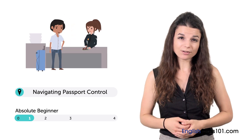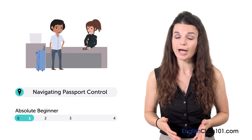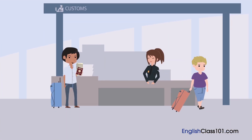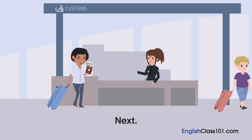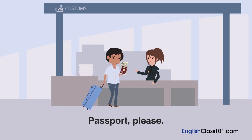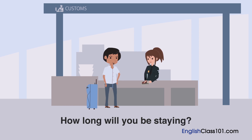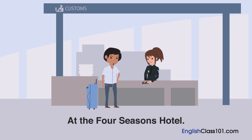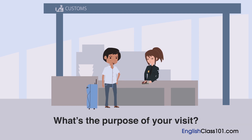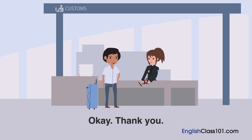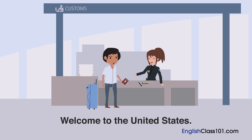Gustavo has just arrived in New York. He's in line at passport control. Let's watch. Next. Passport, please. Hello. Here you are. How long will you be staying? For six weeks. And where will you be staying? At the Four Seasons Hotel. What's the purpose of your visit? I'm here on business. Okay. Thank you. Welcome to the United States.